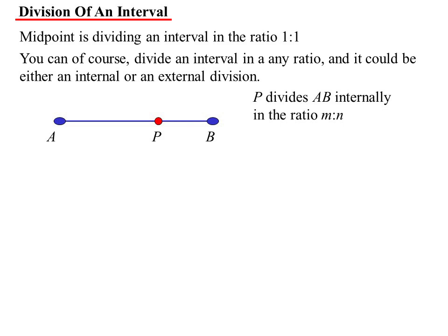Let's say it's M to N. Now, if they say it divides AB in the ratio M to N, the naming is important. That means from A to P would be M parts. From P to B would be N parts. So it's going in the same direction there. Of course, I could have said this the same way. P divides BA internally in the ratio N to M. Again, it all comes down to the naming.